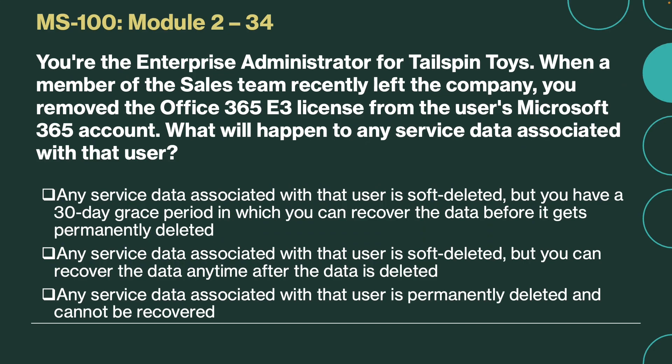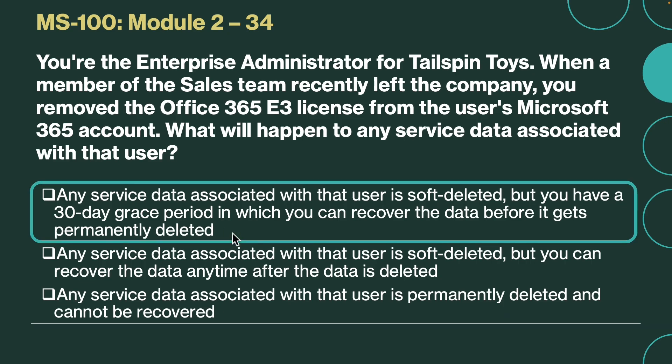Next question. You are the enterprise administrator for Tailspin Toys. When a member of the sales team recently left the company, you removed the Office 365 E3 license from the user's Microsoft 365 account. What will happen to any service data associated with that user? The correct answer is any service data associated with that user is soft deleted, but you have a 30-day grace period in which you can recover the data before it gets permanently deleted. After the grace period, the data is not recoverable.